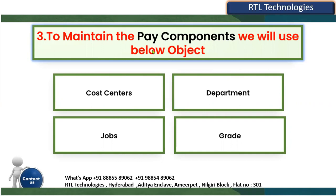From a workforce structures point of view, where do we maintain pay components? Is it in cost center, department, jobs, or grades? Pay components are mainly configured at grades. When implementing Global HR workforce structures, while creating grades the system asks: for employees in this grade, how much salary will you offer — monthly or annually — and how much bonus, monthly or annually? That configuration is what we call a grade. So the correct answer is grade.